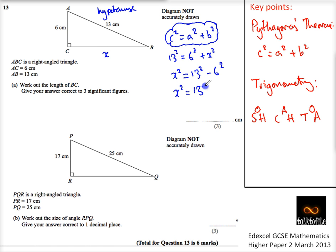x squared is 133. So, therefore, x is the square root of 133, which is 11.53256259, which is roughly three significant figures, 11.5. Three significant figures. So, this is my answer there.